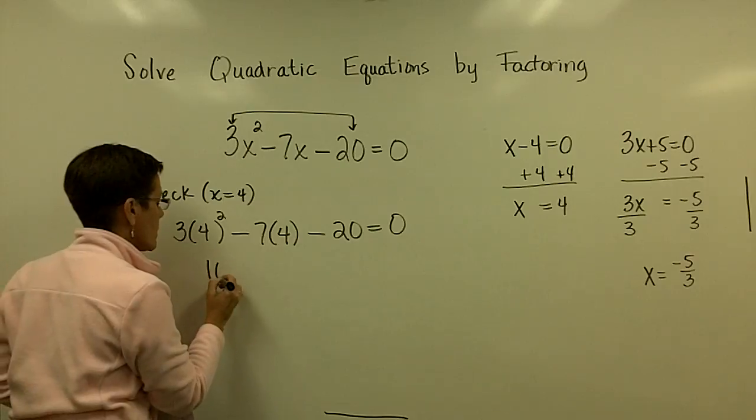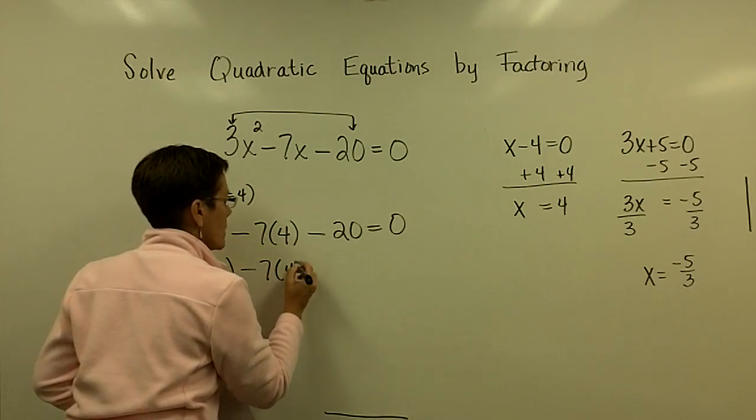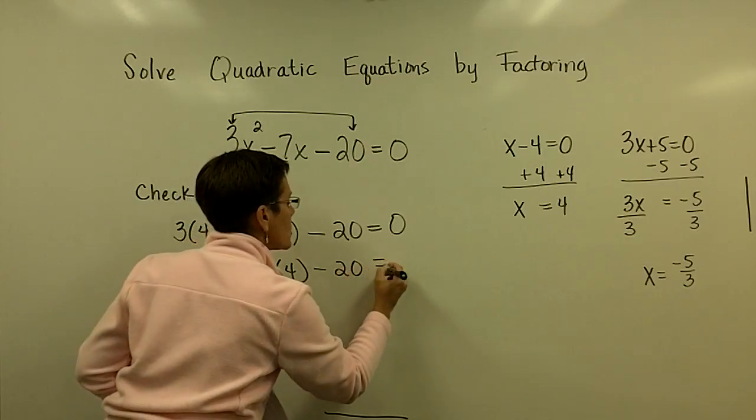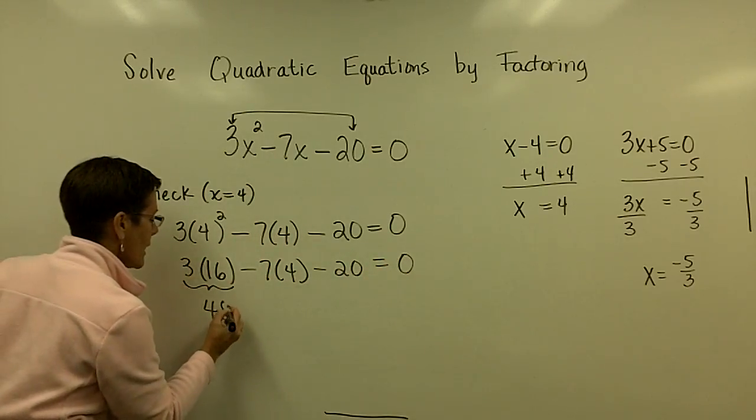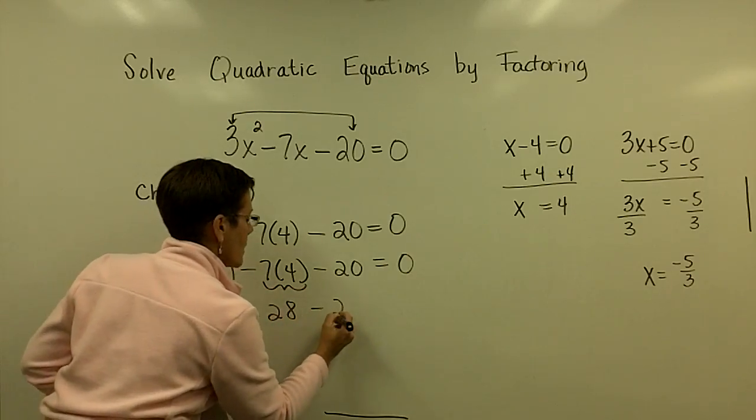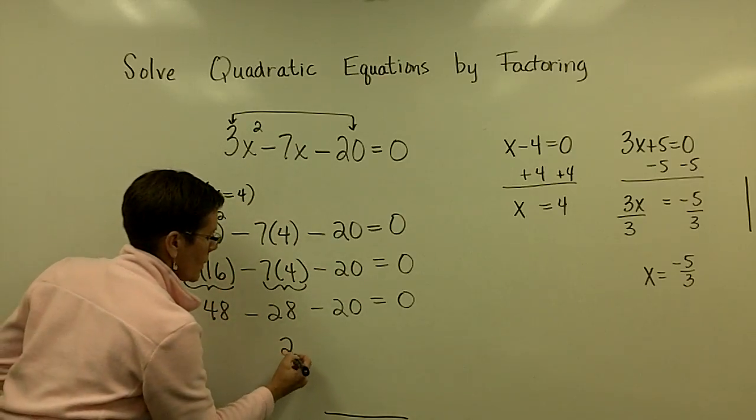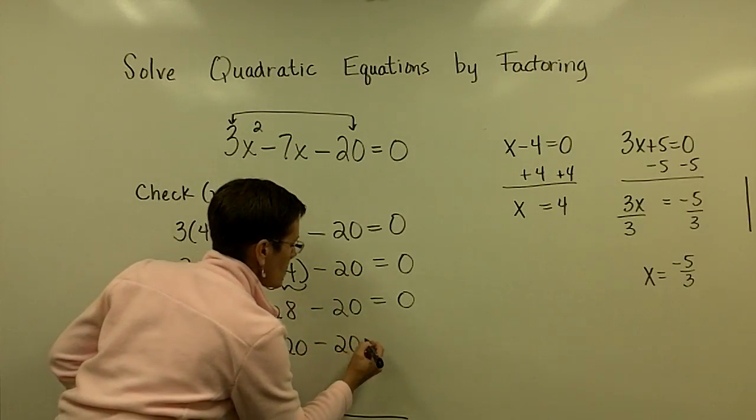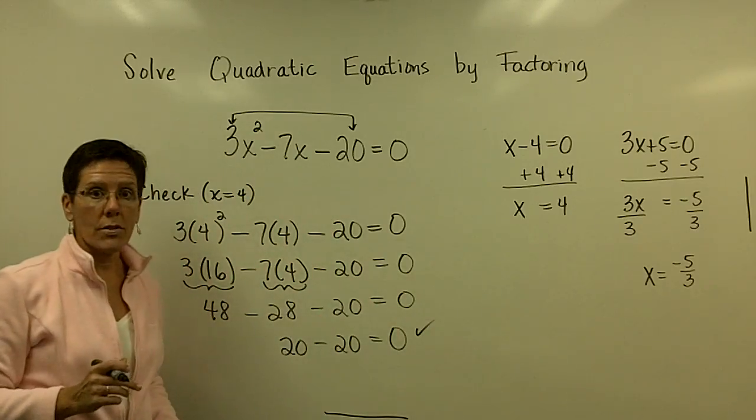I'm going to do the multiplication next. So working from left to right, that product is 48. This product is 28. Then 48 minus 28 is 20. And is 20 minus 20 equal to 0? And I can say yeah. So x equals 4 works.